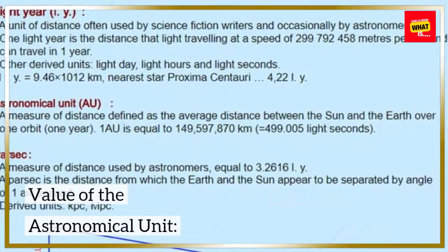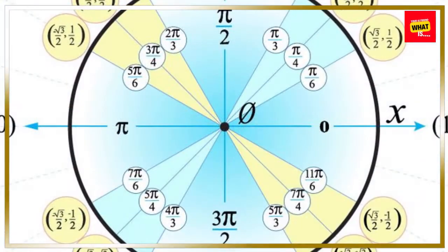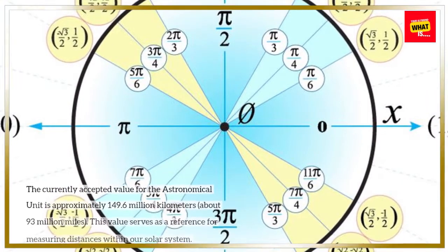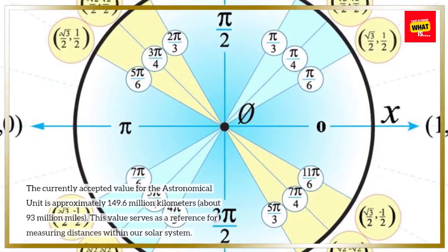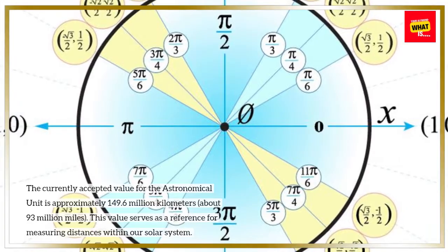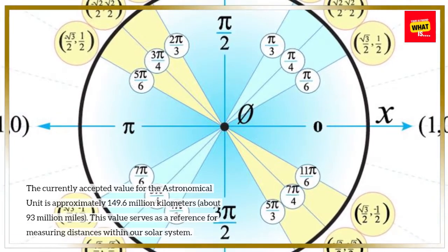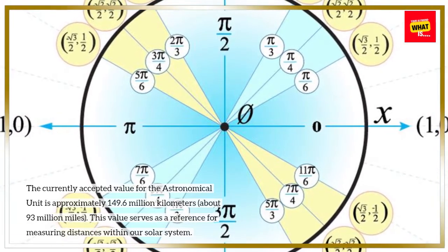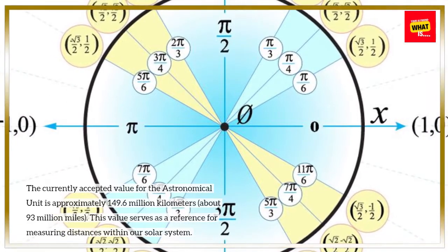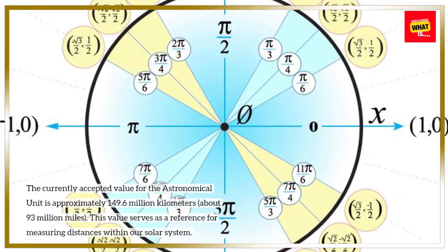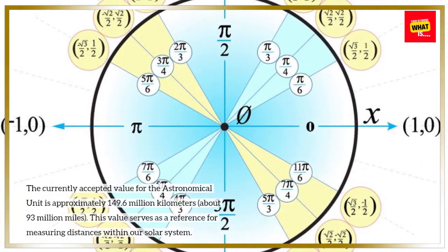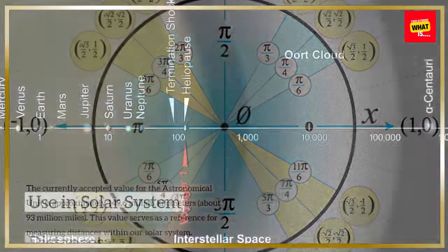The currently accepted value for the astronomical unit is approximately 149.6 million kilometers, about 93 million miles. This value serves as a reference for measuring distances within our solar system.